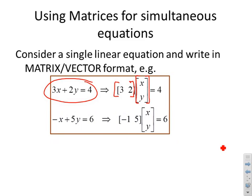I can do the same thing with any linear equation. Here I've got minus x plus 5y equals 6. I've got a row vector with the coefficients, a column vector with the unknowns, and equals 6 on the right-hand side.